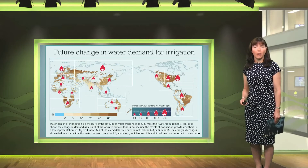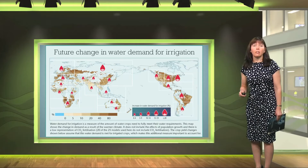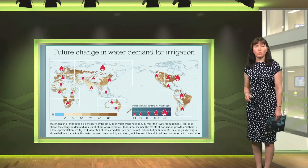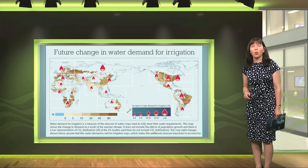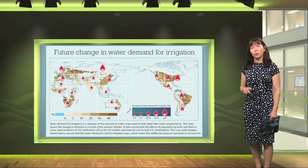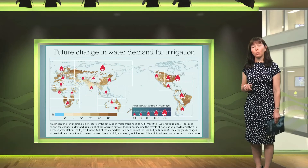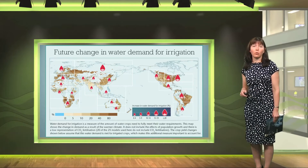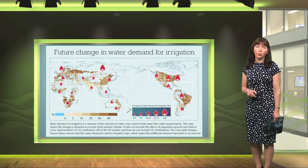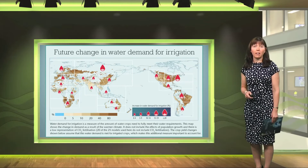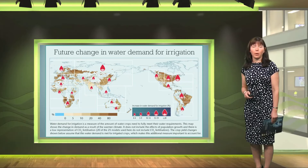Below this map is one that shows the future change in water demand for irrigation. Water demand for irrigation describes the amount of water that crops need to meet their water requirements. In a warmer world crops will need more water, and you can see here that the demand increases everywhere.